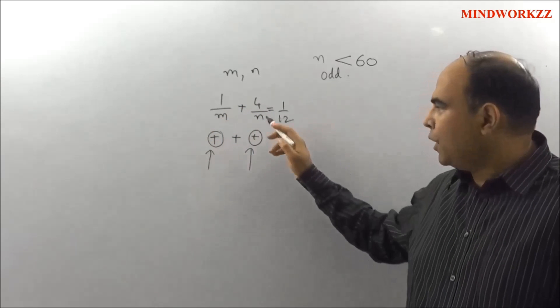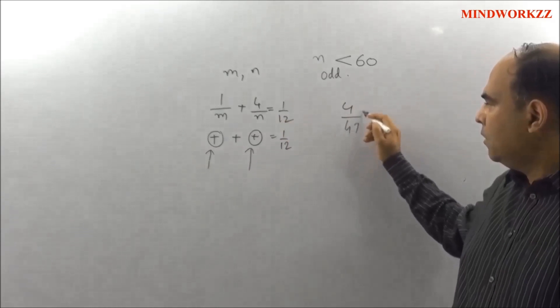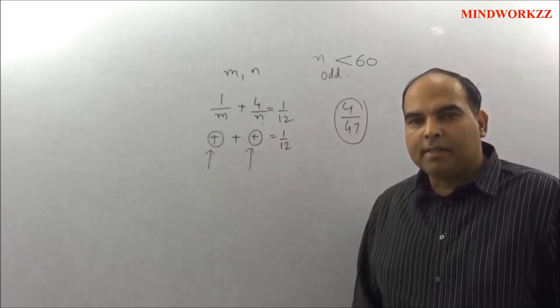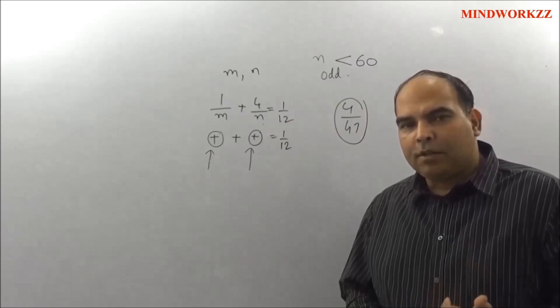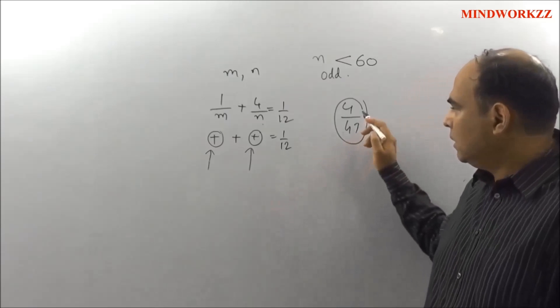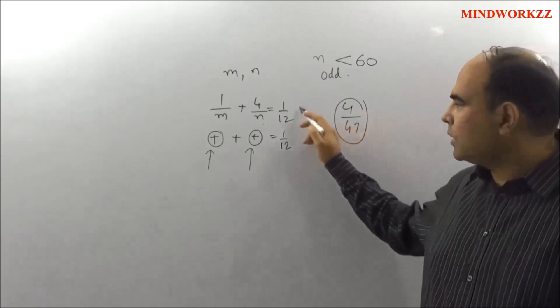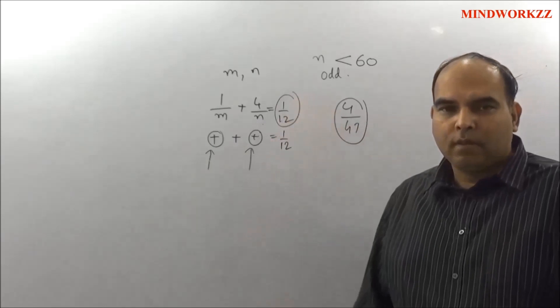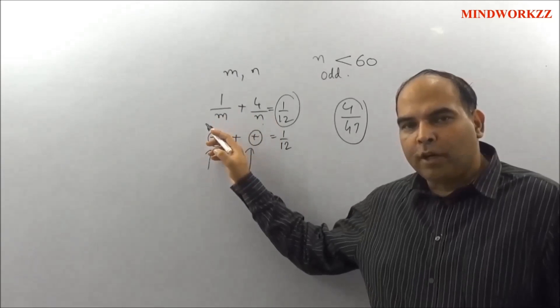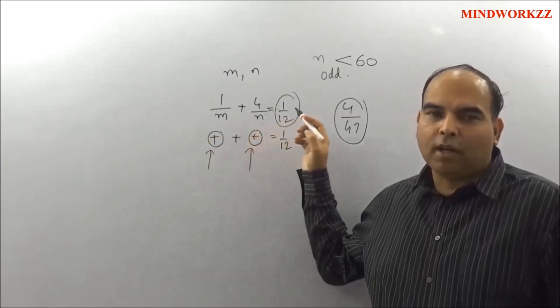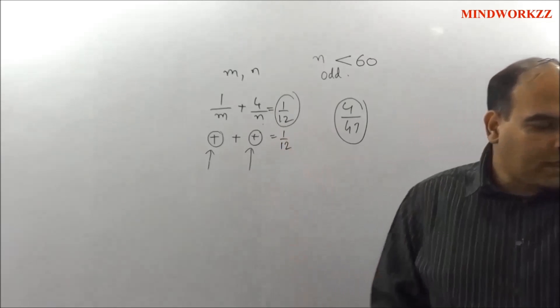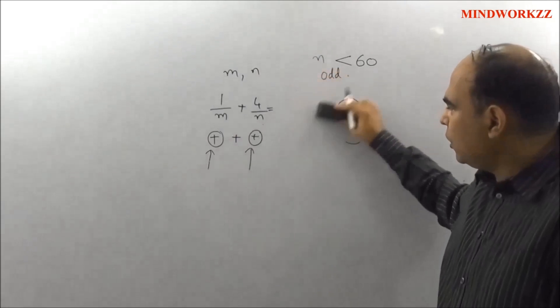So for example, if you take n as 47 here, given that n is odd and less than 60, a value like 47 can never work in this case simply because the value of 4/47 itself crosses the value of 1/12. That is something which can't happen because then adding 1/m, which is again a positive quantity to 4/47, will not bring the value down to 1/12. So that's the first reaction, and that reaction then tells you that in this equation...